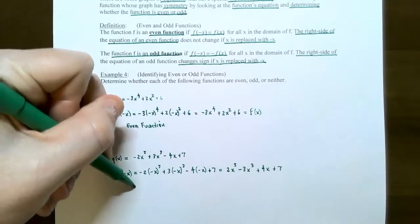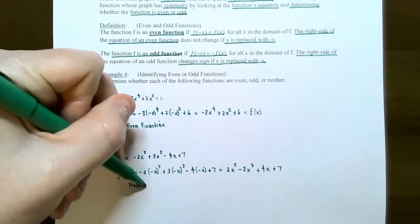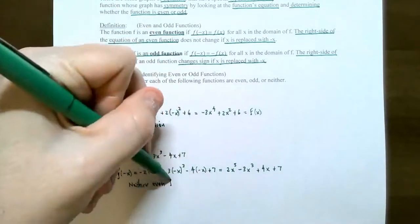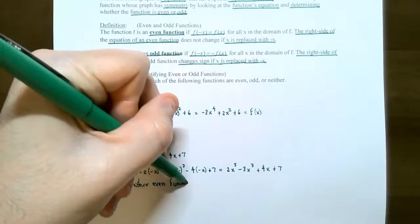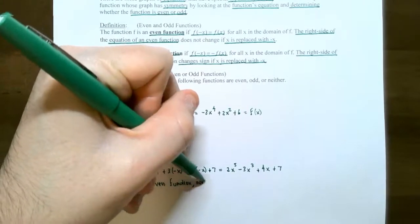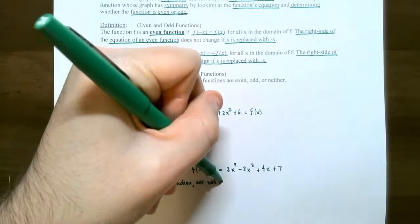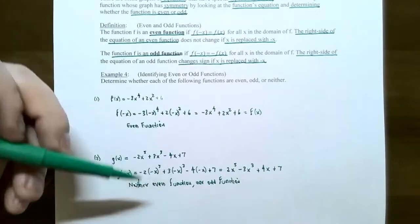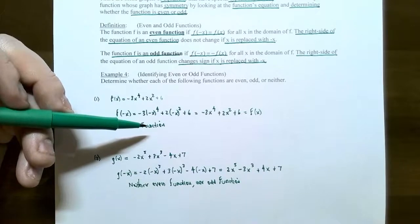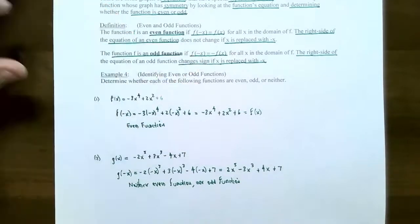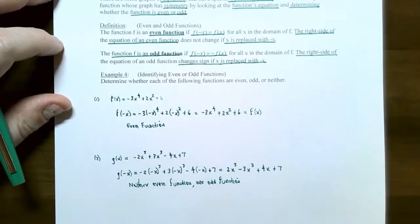So this function is neither even nor odd. If the function stays exactly the same, it's even. If the function becomes the opposite sign throughout, it's odd. This function was neither — not even nor odd.